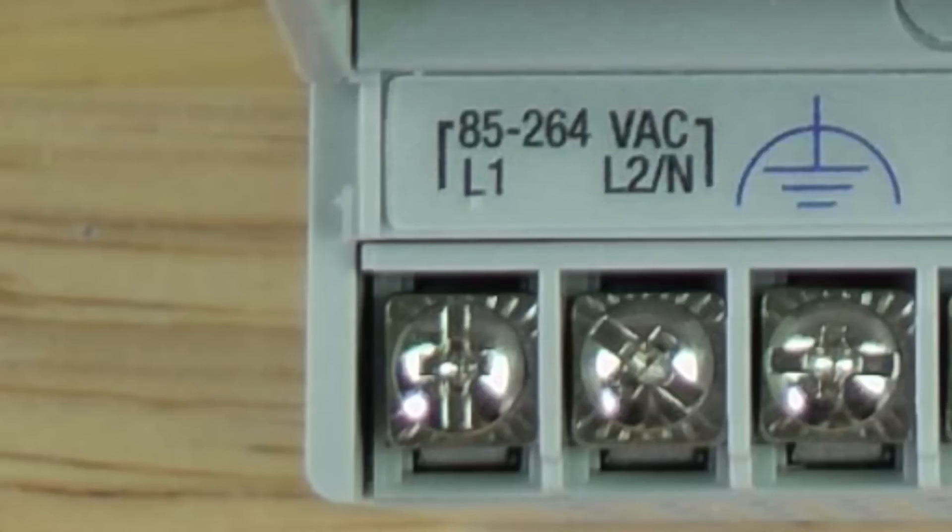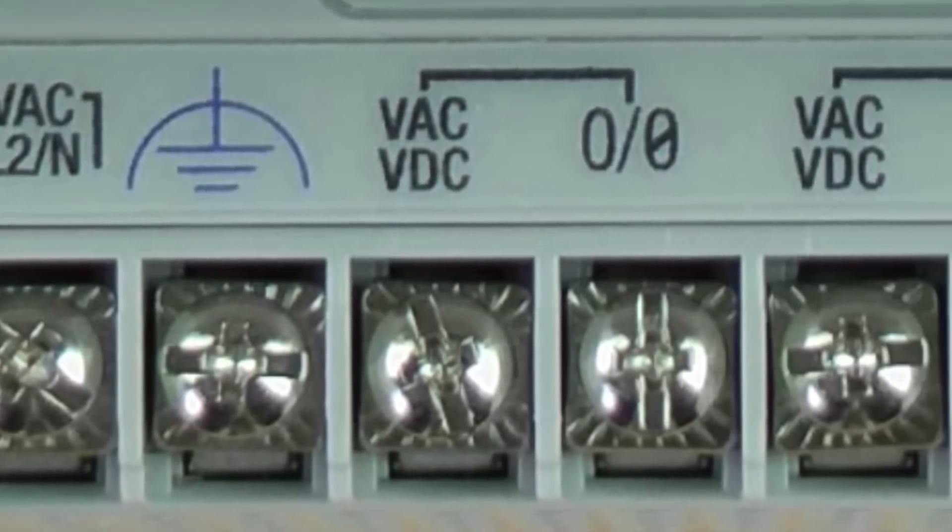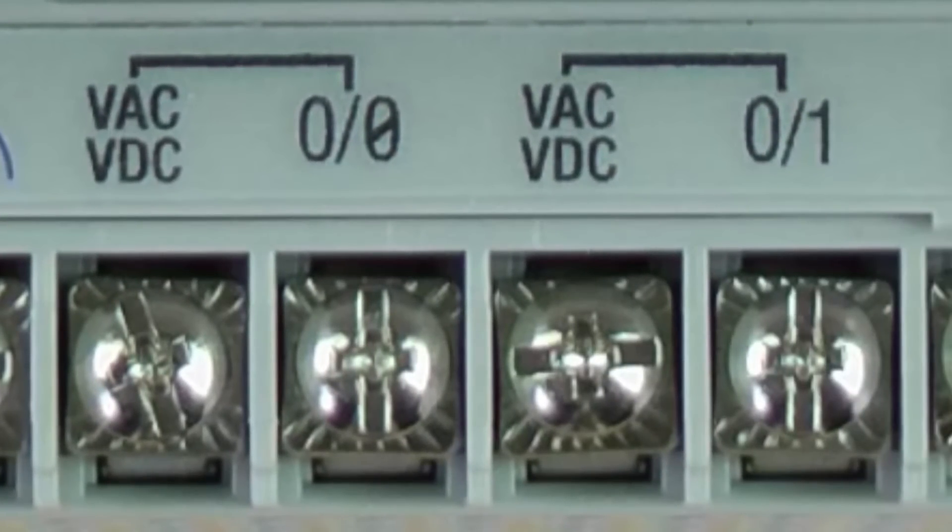To the right of that, we have our first set of outputs. You notice that they're labeled O slash and then a number starting at zero. These are, in my case, relay outputs. You'll notice that each output has its own power terminal, so these are isolated outputs.